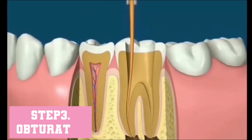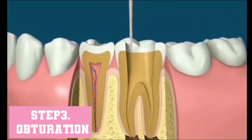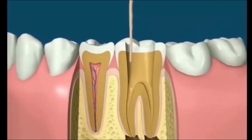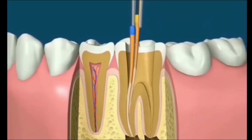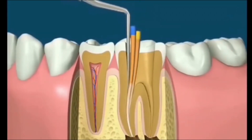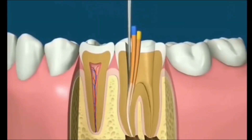Rubber cones covered with a liquid sealer are placed into the canals. Once enough cones have been placed, spreading instruments can then be used to compact the cones even further, until the canal is tightly sealed.